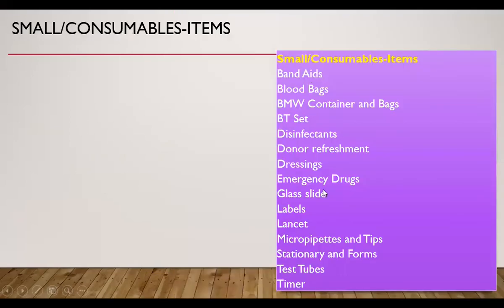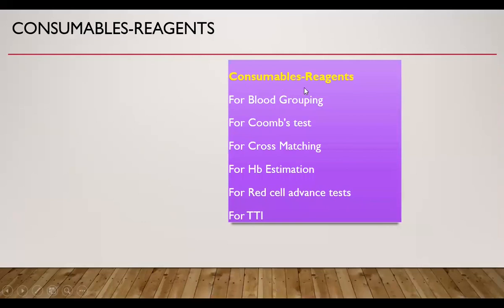This is a list of small or consumable items required in day-to-day blood bank activities. Consumable reagents are classified as those required for blood grouping, Coombs testing, cross matching, hemoglobin estimation, advanced red cell tests, and transfusion transmitted infections.